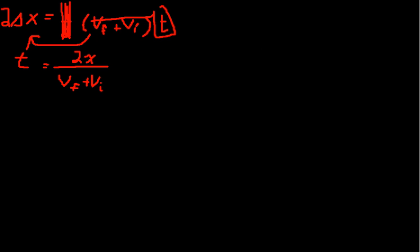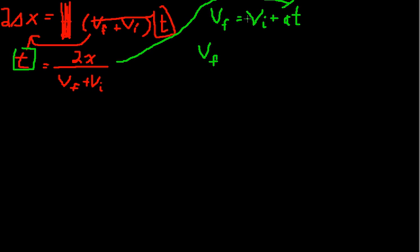Then our other kinematics equation was the final velocity is the initial velocity plus acceleration times time. And well, we have time, right? We have time right here. So let's plug this in. Let's stick this in for t right there. So we get Vf, and actually let's do two steps at once. I'm also going to subtract this Vi right here, and I'm going to put it over on this side. So we've got Vf minus Vi equals A times 2x over Vf plus Vi.